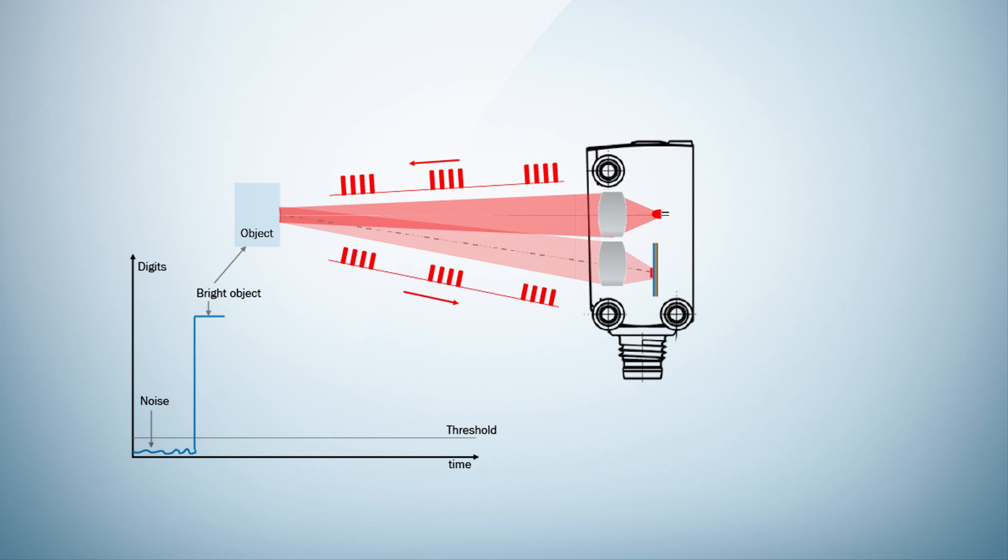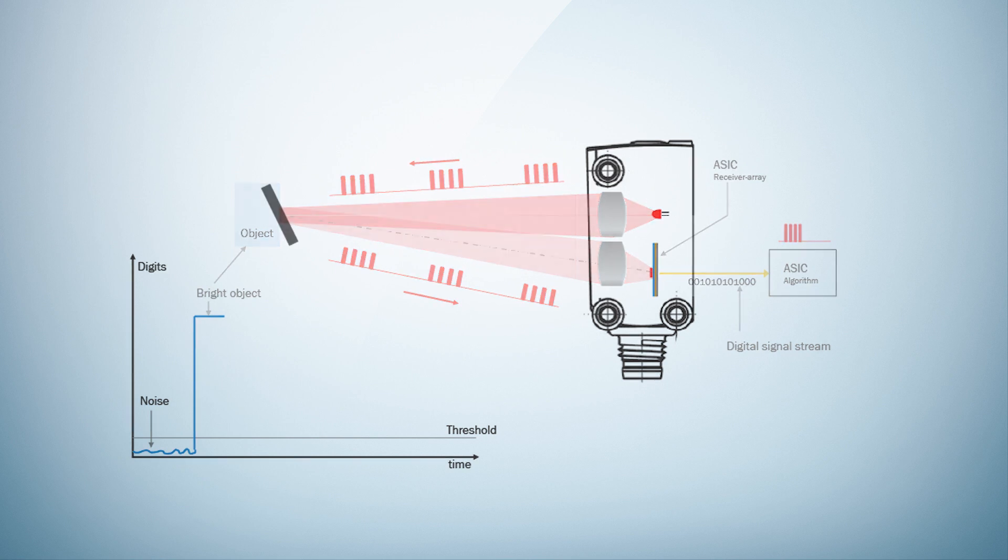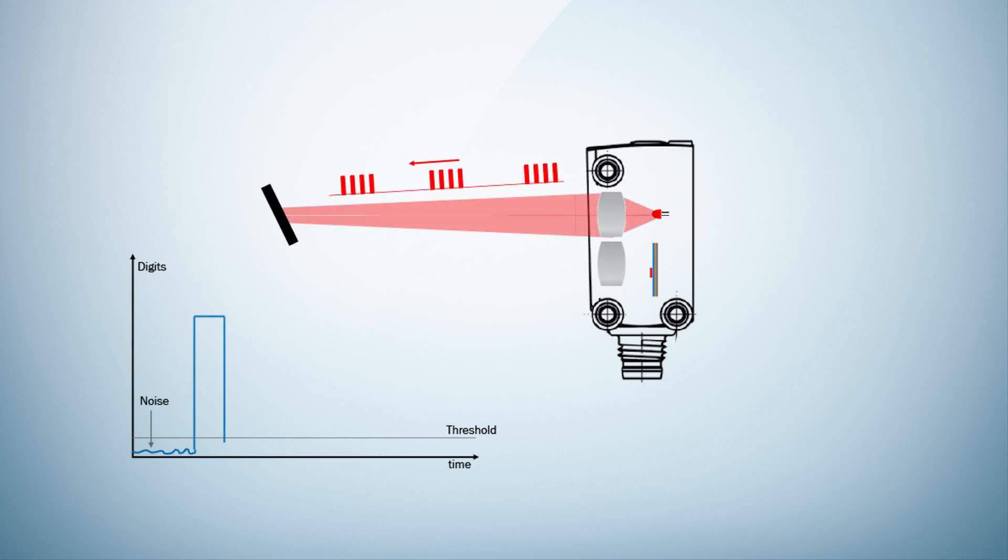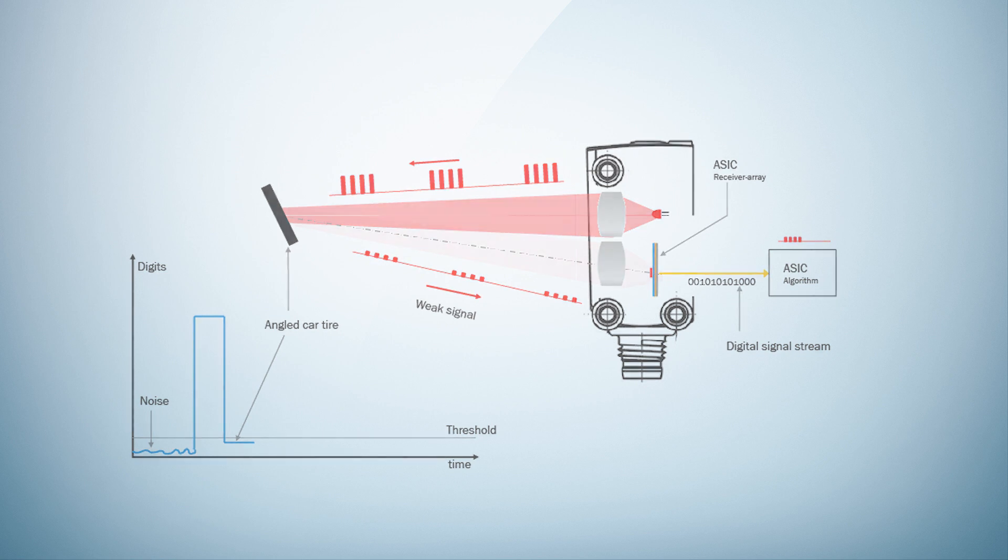Clearly, if a bright object is detected, a great amount of light is reflected, captured, and a stable signal is available. If a poorly emitting object is now viewed at an angle, such as a car tire, the light is absorbed or reflected away and only a homeopathic amount of light reaches the receiver. The signal drops so far that it no longer has sufficient distance to the noise and cannot be evaluated.